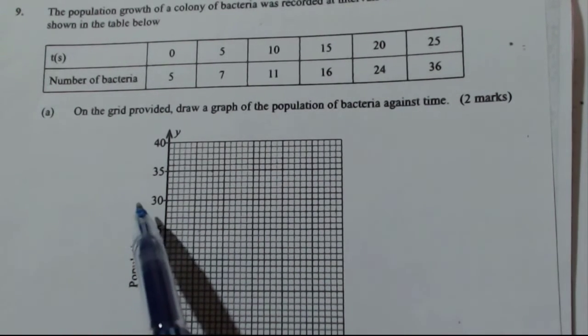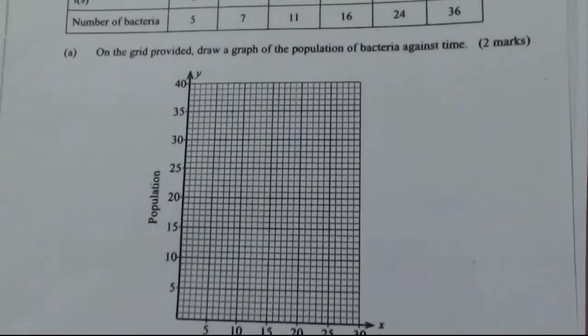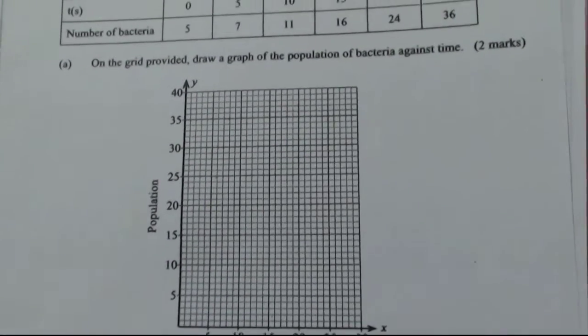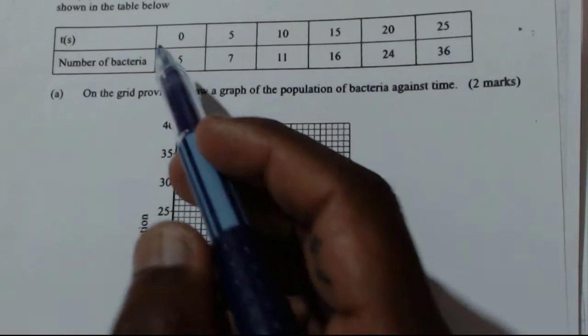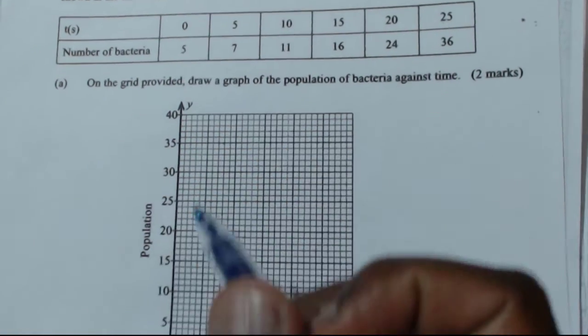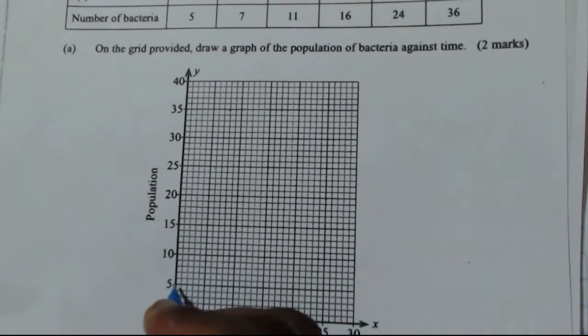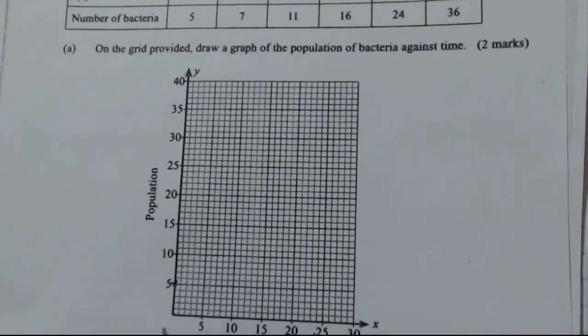So you're going to plot population of bacteria against time. So the first one is T equals zero, number of bacteria is five. So we plot that. So zero is here, five is here. So that is the first plot.